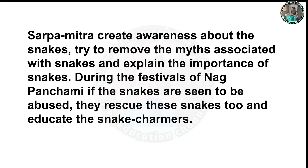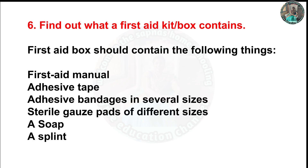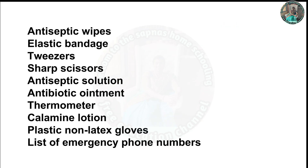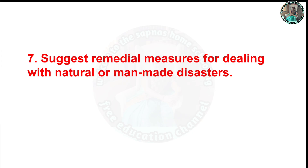Question six: Find out what a first aid kit box contains. A first aid kit box should contain: a first aid manual, adhesive tape, adhesive bandages in several sizes, sterile gauze pads of different sizes, soap and splint, antiseptic wipes, elastic bandage, tweezers, sharp scissors, antiseptic solution, antibiotic ointment, thermometer, calamine lotion, plastic non-latex gloves, and a list of emergency phone numbers.